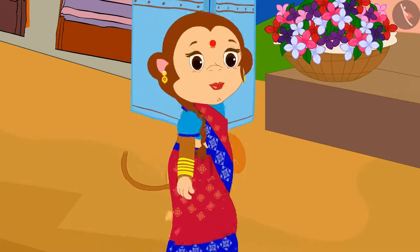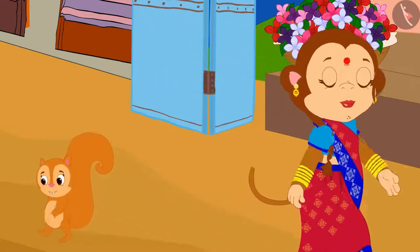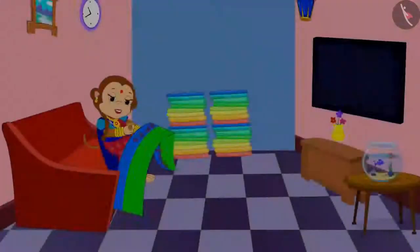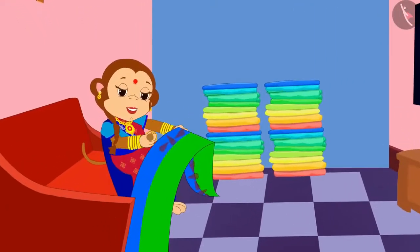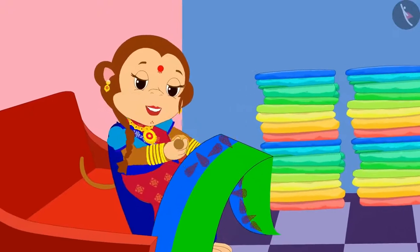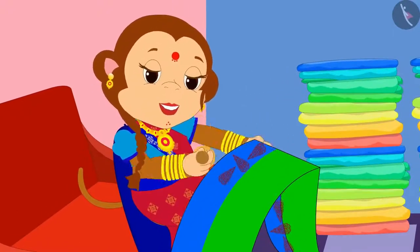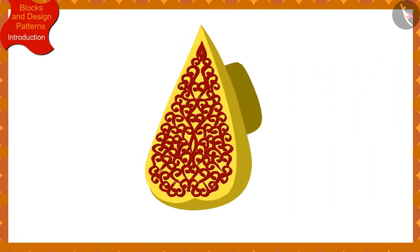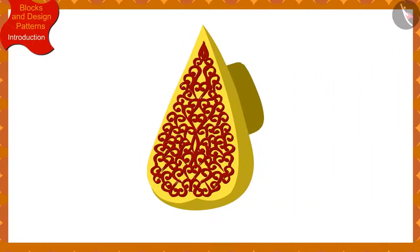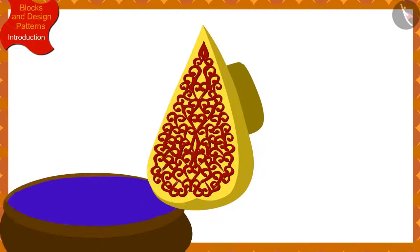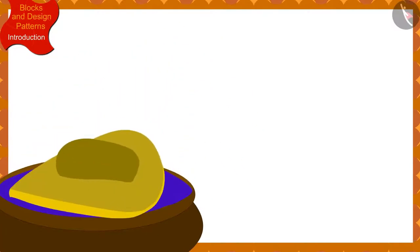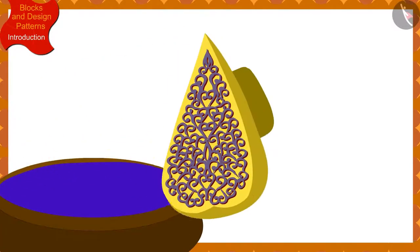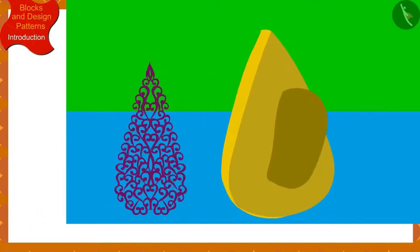Banno said and returned to her house. Banno returned home and started designing a saree for Chanda. Banno has a block of this design. She first dipped her block in a box of color and made an impression on the saree using her block in this way.